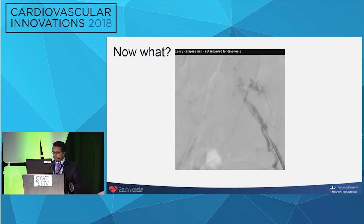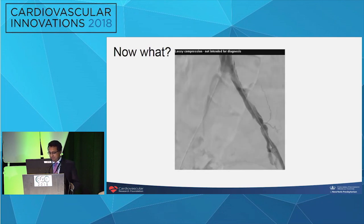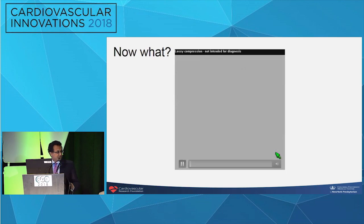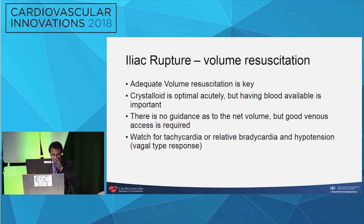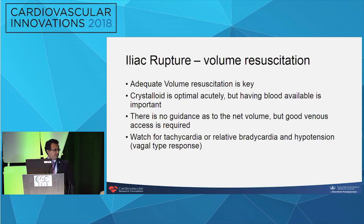At this moment, the first thing to do — and whenever we do these cases, you can see we have a long bright tip sheath that's been pulled back as we're doing inflation. The bright tip we start with is always 7 French for a reason. We always leave the balloon on the wire just in case, because the next thing we need to do in addition to volume resuscitation is to get hemostasis. One thing we as interventional cardiologists don't do well is prepare for these potential complications by having a type and cross and blood available.